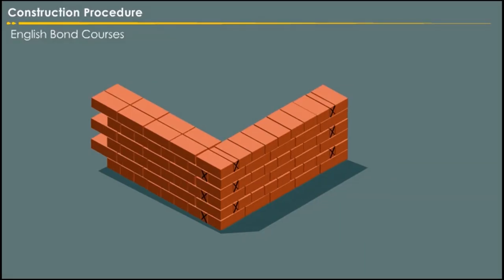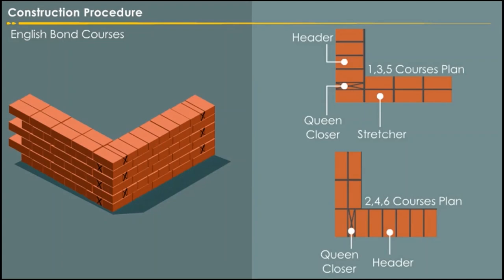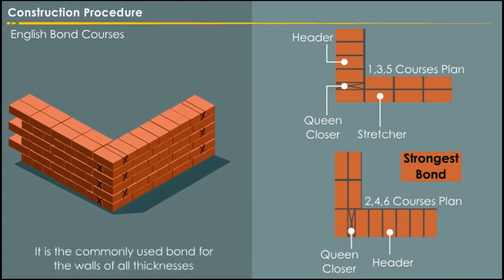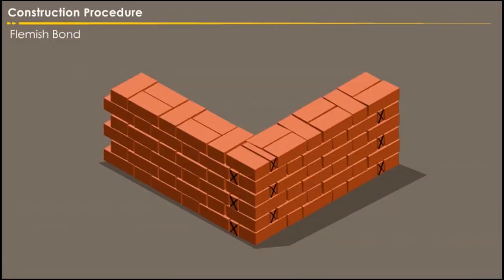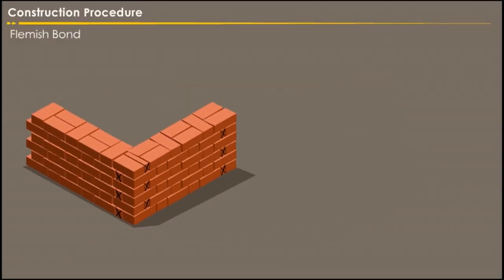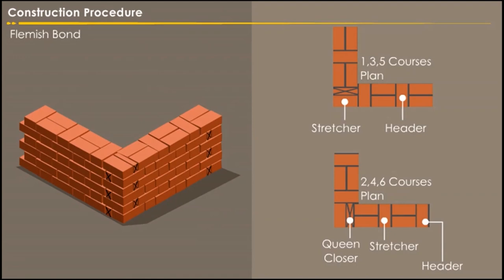English bond courses consist of headers and stretchers. This is considered to be the strongest bond, and hence it is the most commonly used bond for walls of all thickness. In Flemish bond, each course comprises alternate headers and stretchers, with alternate courses starting with a stretcher and a header.